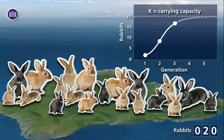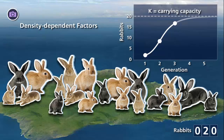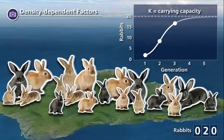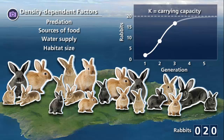Carrying capacity is an example of a density-dependent limit on growth. A density-dependent factor is a condition whose influence depends on the size of a population. It can be biotic factors, such as predation or sources of food, or abiotic, such as water supplies or habitat size. As a population approaches the carrying capacity, either the birth rate decreases or the death rate increases, or both occur.